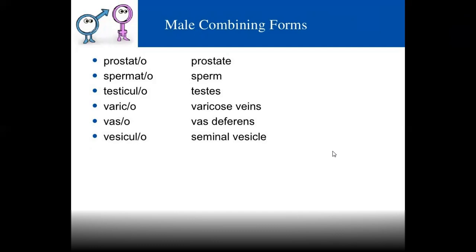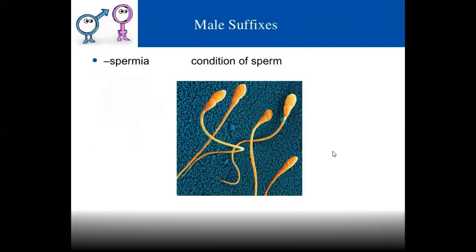Vasicular refers to seminal vesicle. These are sperm-related conditions. For example, oligospermia refers to low sperm count.